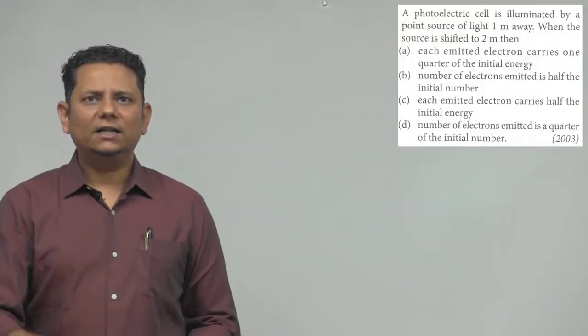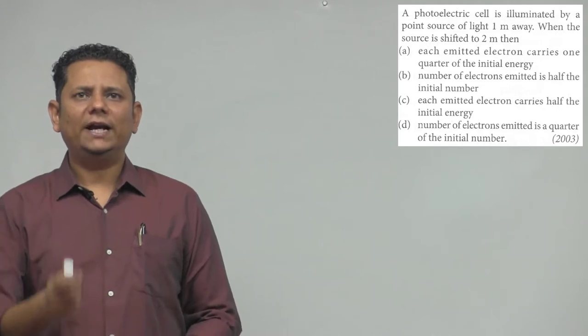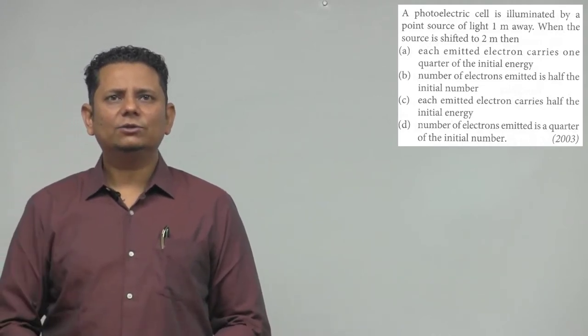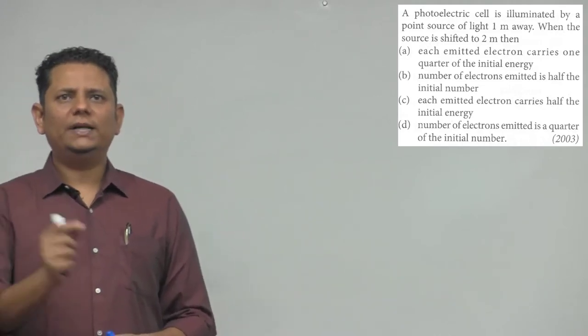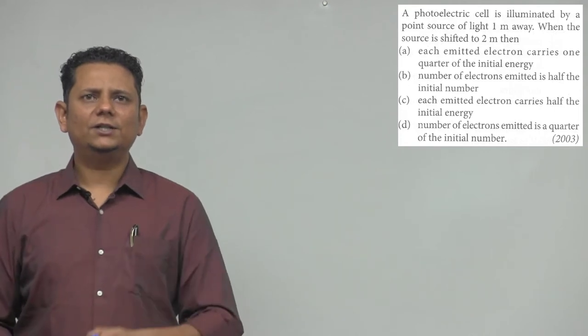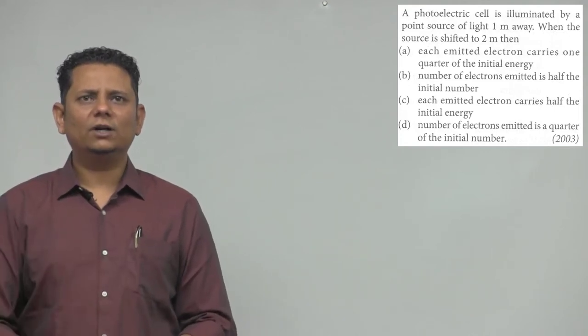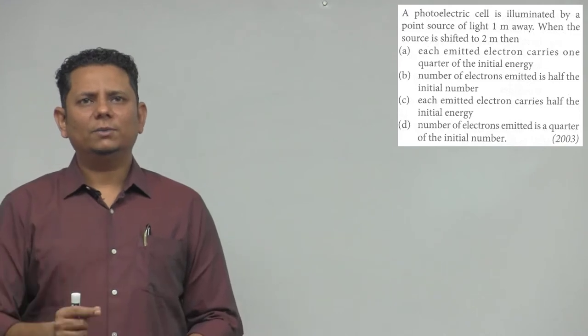Next question, question 23 says: A photoelectric cell is illuminated by a point source of light 1 meter away. When the source is shifted to 2 meters, then each emitted electron carries one quarter of the initial energy - that's option A.